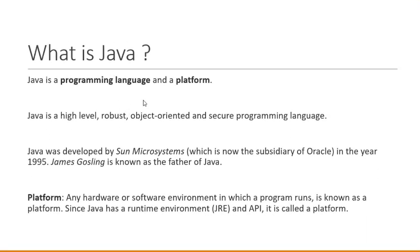What is Java? First of all, Java is one of the programming languages. Like C, C++, Python, we have different types of languages — in the same way, we have Java. Along with being a language, Java is also a platform.